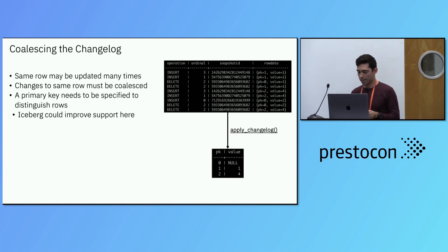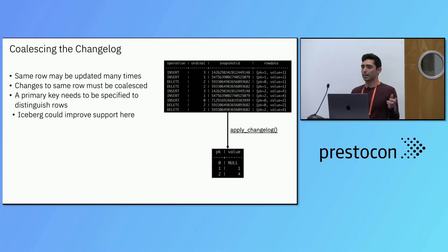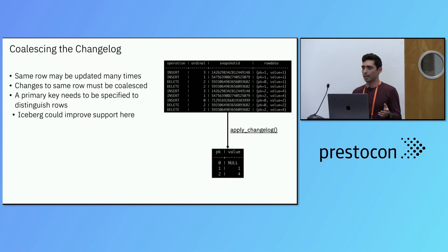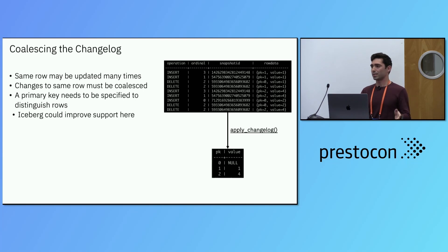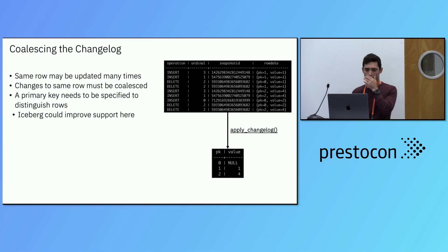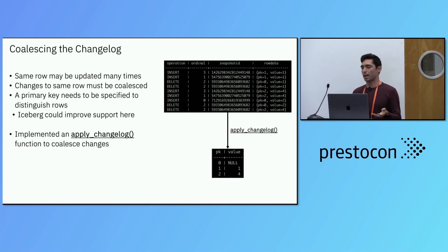One challenge with coalescing row-level changes is that you need to accurately identify a particular row — basically a primary key. Presto doesn't have primary key support today, and Iceberg doesn't either as far as we know. As an ad hoc solution, we applied a table property: if you want to use sample maintenance, you set a table property on your Iceberg table specifying the primary key column, and we use that column when generating sample maintenance queries. Hudi does support primary keys, so it would be great to see that for Iceberg.